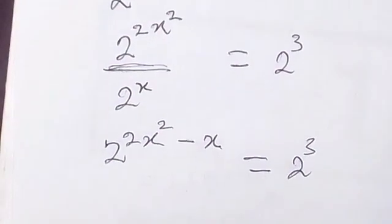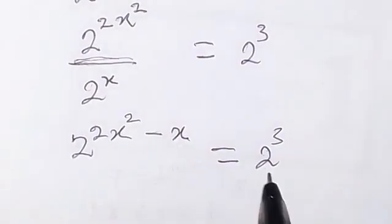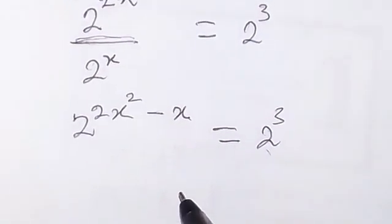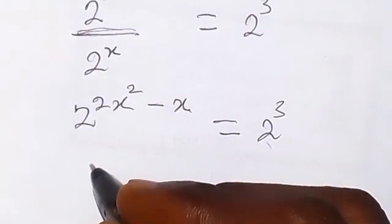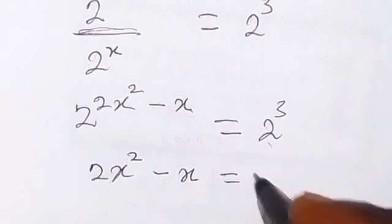From there now we can see that on the two sides we have the same base. So we can equate the power and therefore we now have 2x² minus x equals to 3.